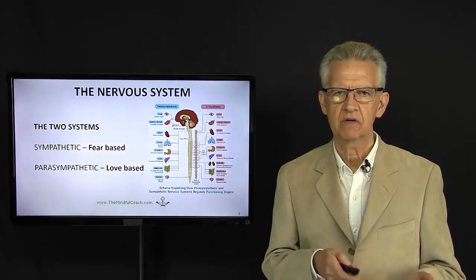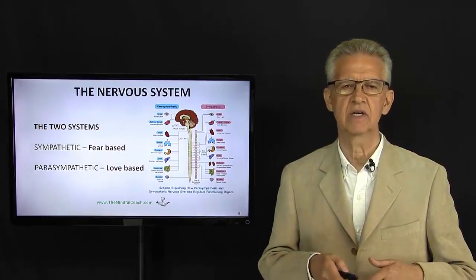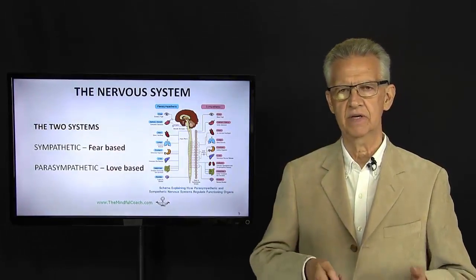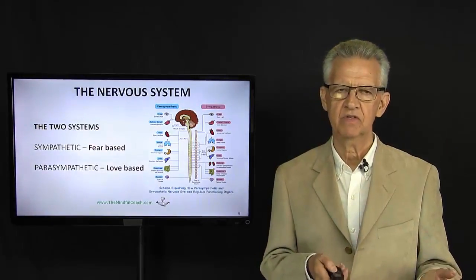The other one is the parasympathetic, and that has this love base to it. That's like, I'm feeling good about myself. I can handle this. So, that's the parasympathetic nervous system.